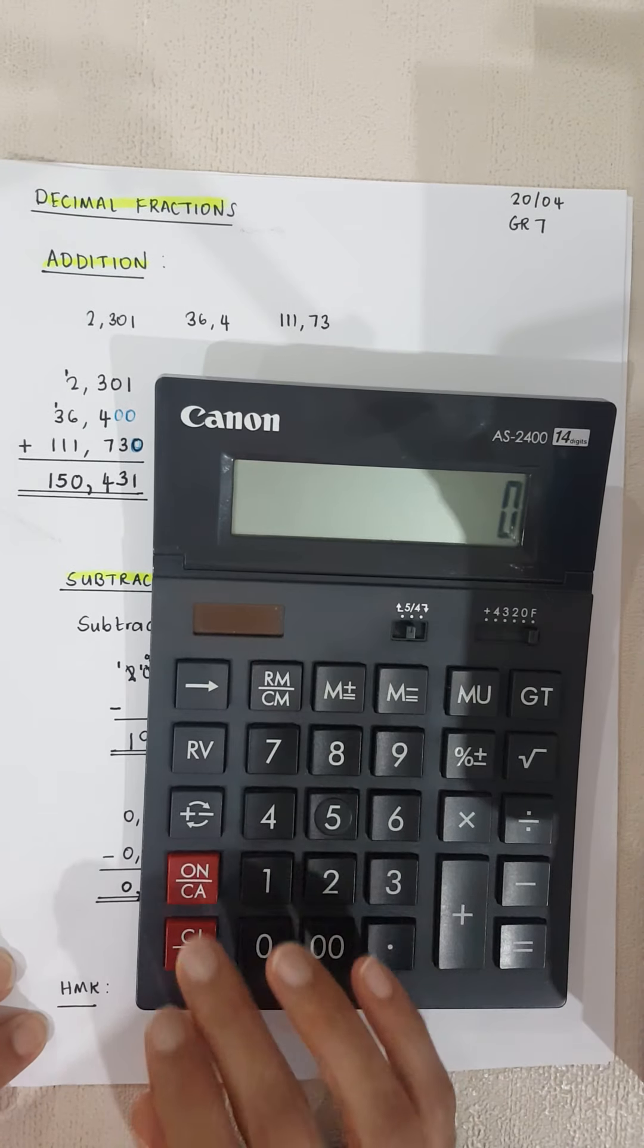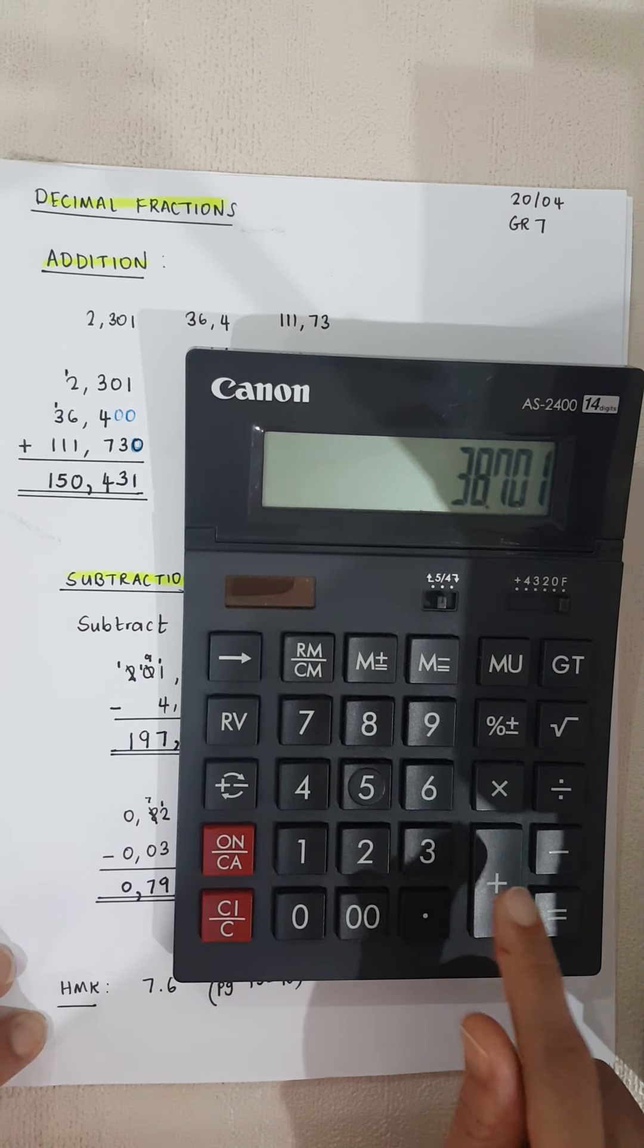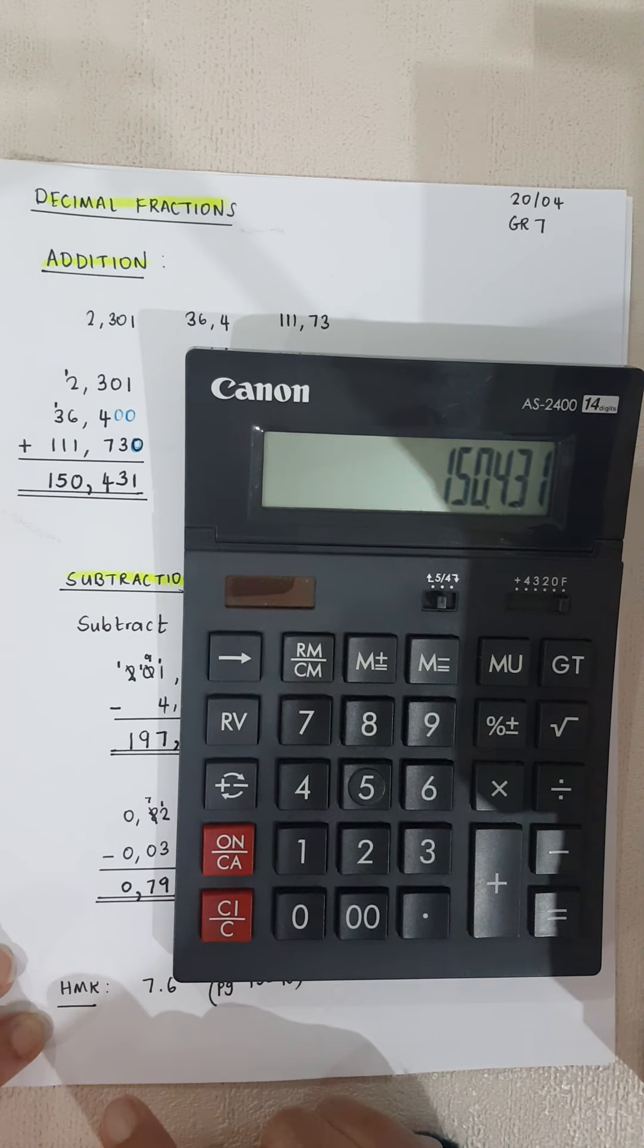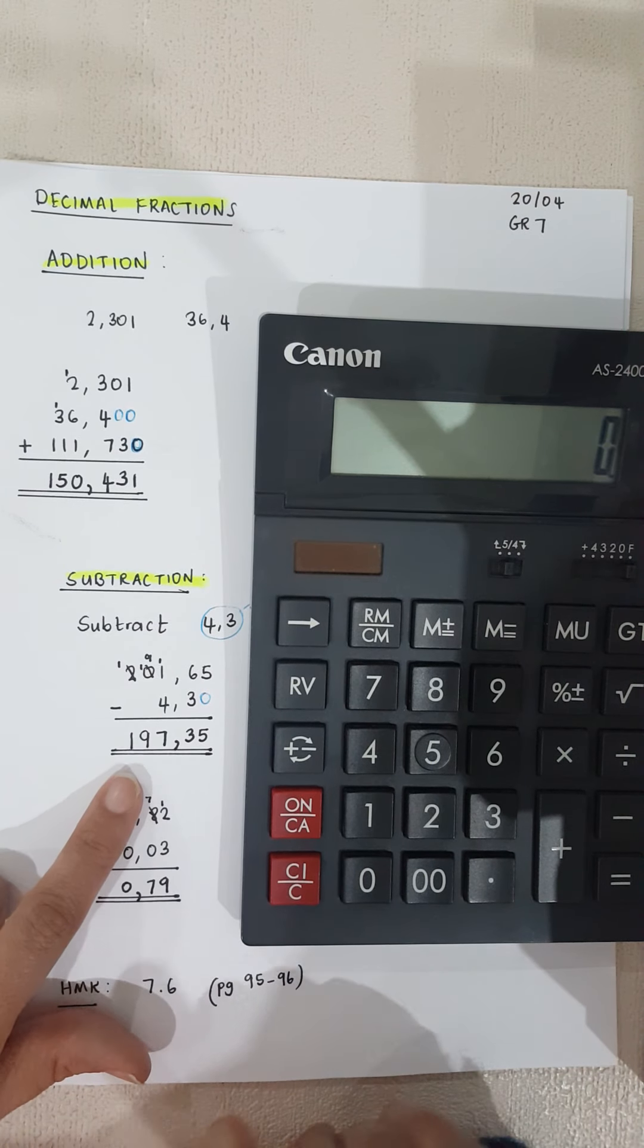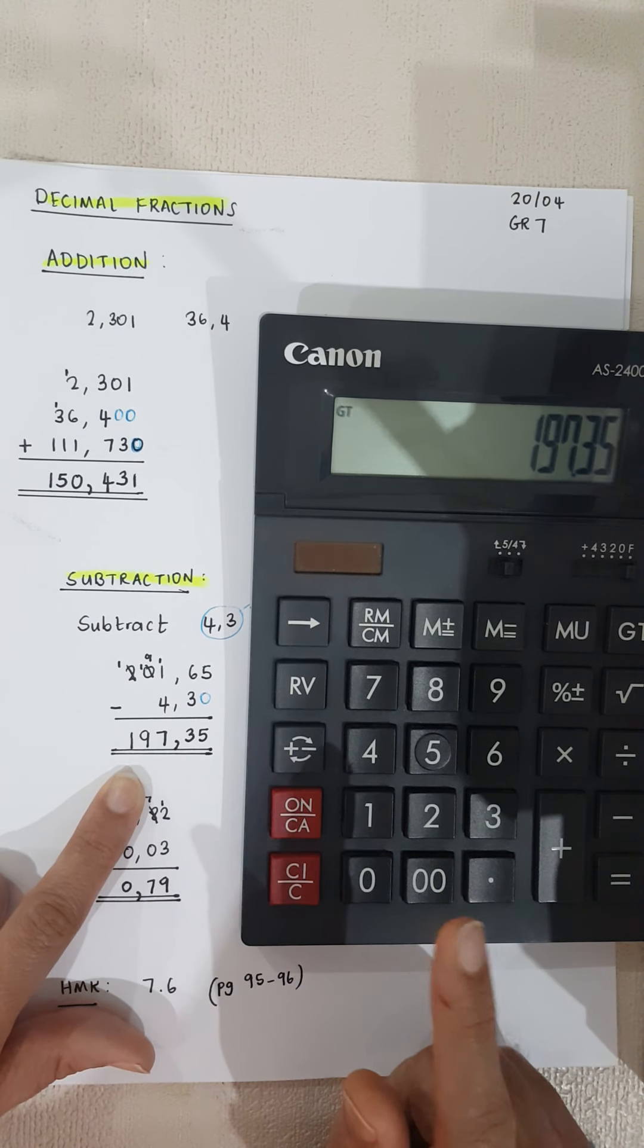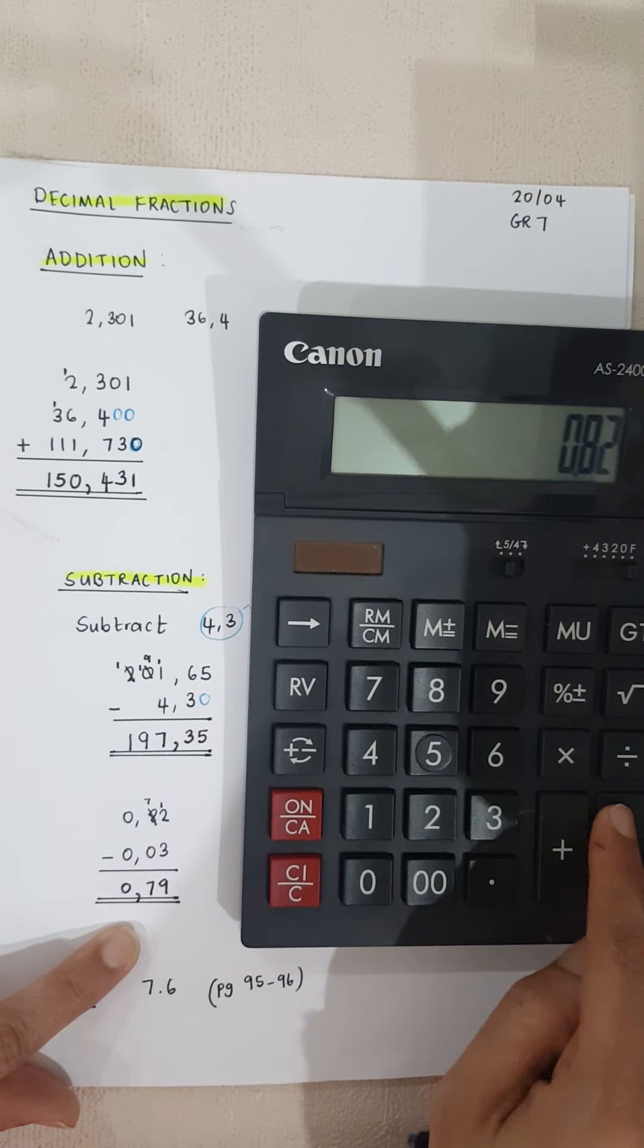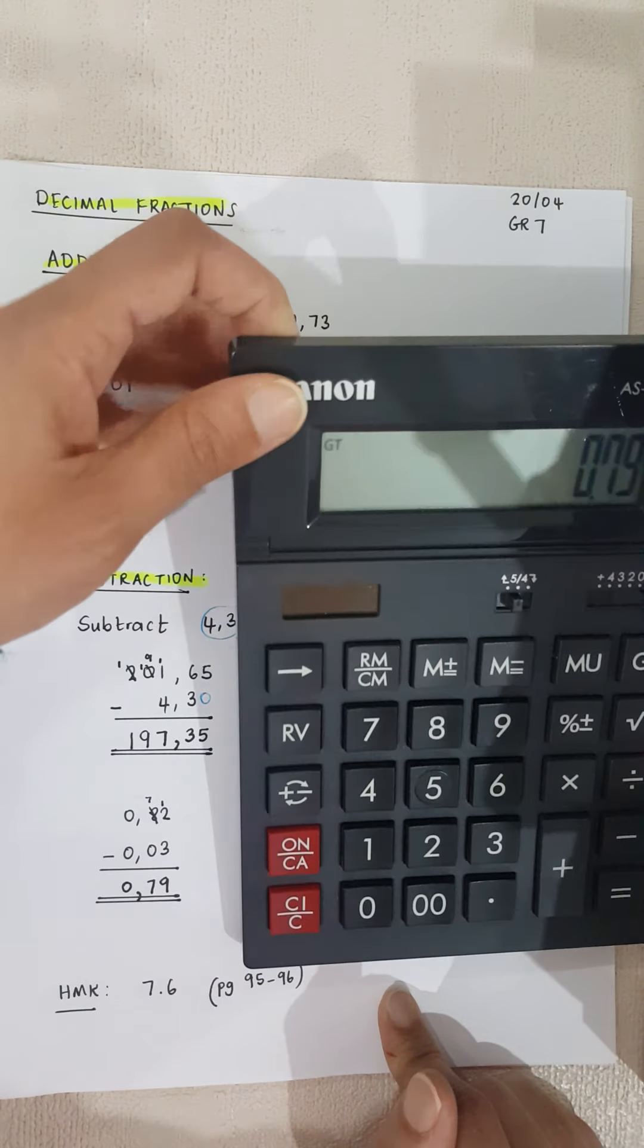Now they're telling us to check our answers with the calculator. So let's use a calculator. My first one, and my answer becomes 150.431. Let's do the next one. Next one says we've got 201.65 and we're minusing 4.3, and my answer is 197.35.